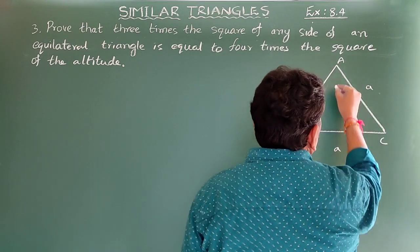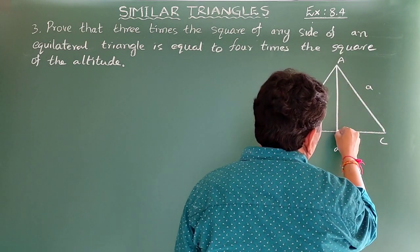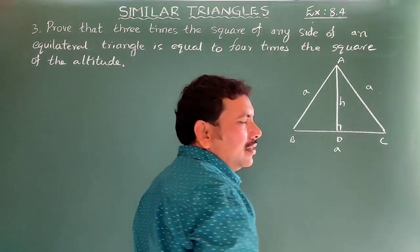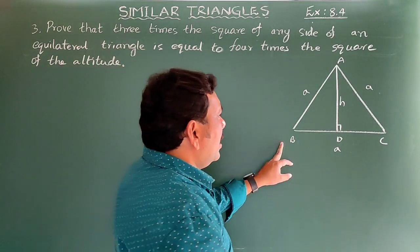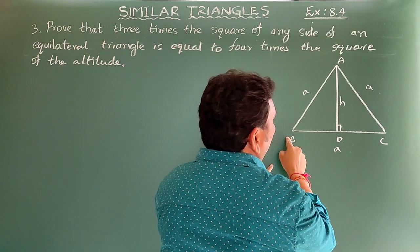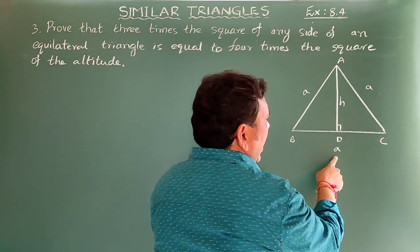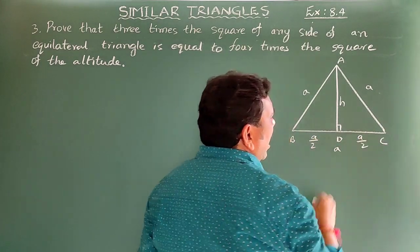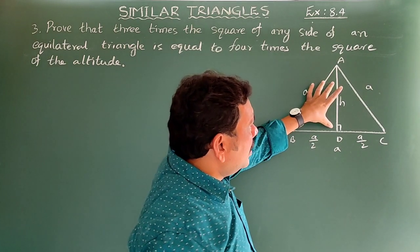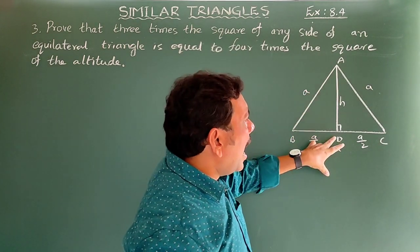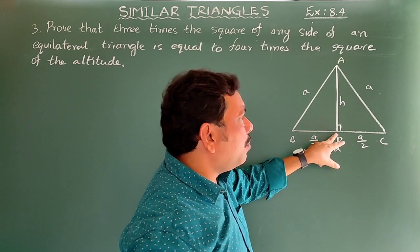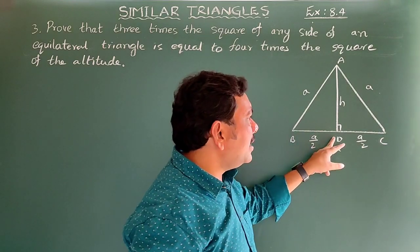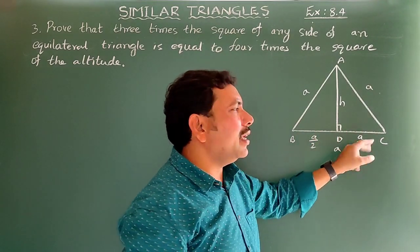Draw an equilateral triangle ABC of side A. Let AD be the altitude of length H. Since it is an equilateral triangle, the altitude divides the base BC into two equal parts, so BD = DC = A/2.